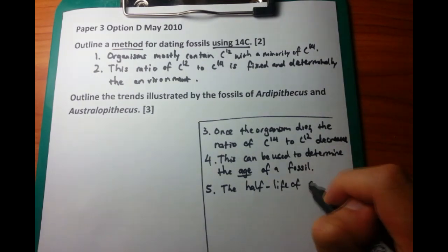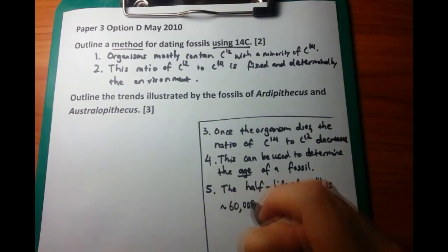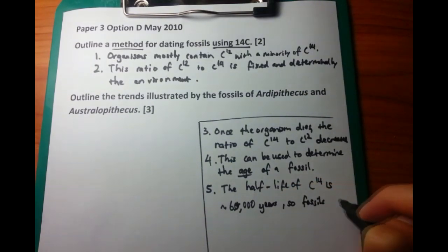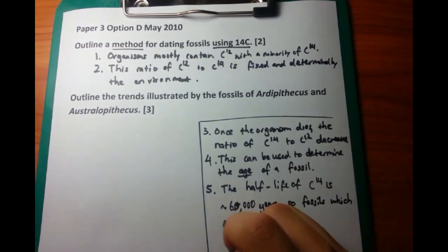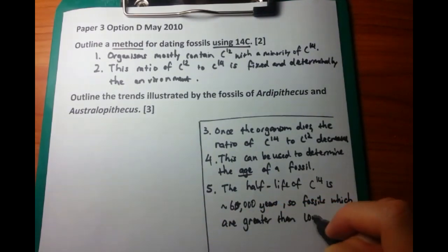Now, the half-life of carbon-14 is approximately 60,000 years. So if a fossil is extremely long, say if it was 200,000 years old versus 4 million years old, you'd have no idea what the difference is, because the amount of carbon-14 is going to be so small you can't tell the difference. That's where the half-life of carbon-14 is important.